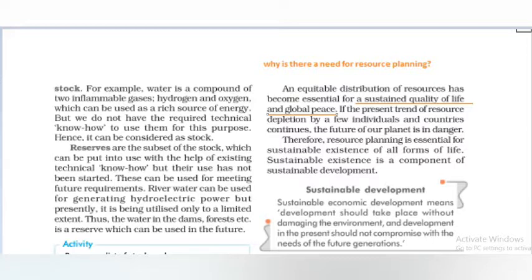For example, in India, some parts have petroleum while other parts have water resources. It is important that every part has access to every resource, which is why resource planning is necessary. Also, if the present rate of resource depletion by few individuals and countries continues, the future of our planet is in danger. We have to save our resources for the next generation.